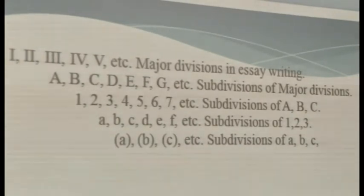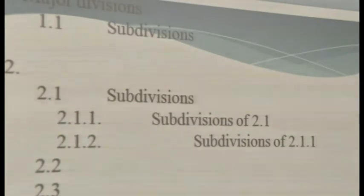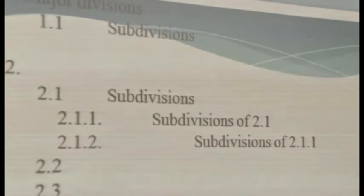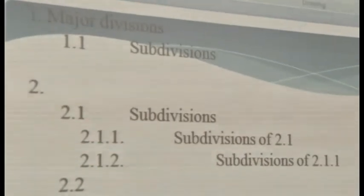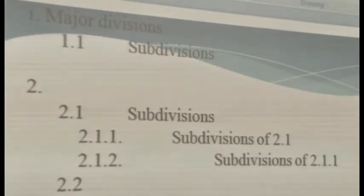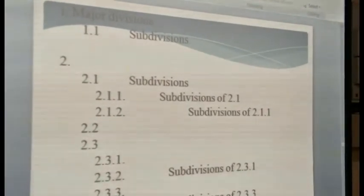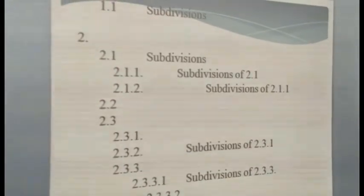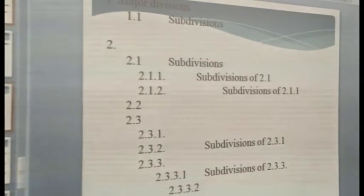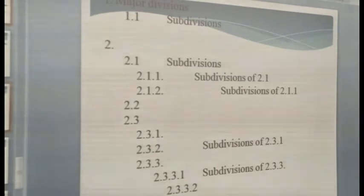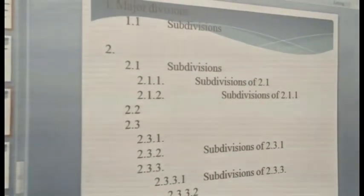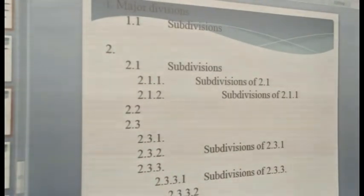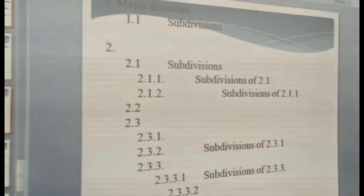The second system of notation consists of the use of Arabic numerals to number ideas and full stops to indicate the subdivisions. In this system, the major divisions are numbered in Arabic numerals. Number one is given to the first major division, and if it has subdivisions, they will be numbered 1.1. You number the next major division 2, and if it has subdivisions, it will be numbered 2.1. If 2.1 has its own subdivisions, it will be numbered 2.1.1. Note the indentation that follows.